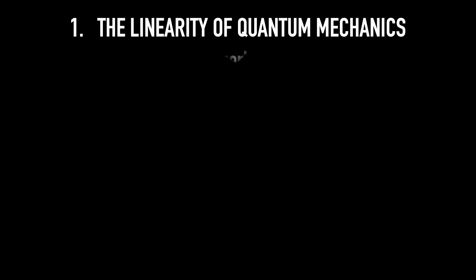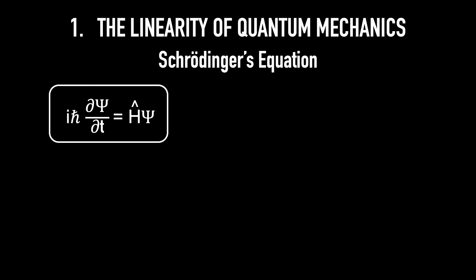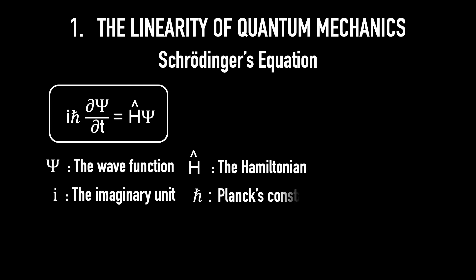Now, our main topic, Schrödinger's equation: i h bar d dt of psi is equal to H hat psi. Here, psi is the wave function. H hat, the Hamiltonian, is a linear operator. i is the imaginary unit, and h bar is Planck's constant divided by 2 pi. If you define L psi as i h bar d dt of psi minus H hat psi, then you can write Schrödinger's equation in the form L psi equals 0. You can check that L is a linear operator.